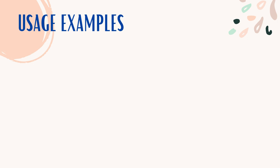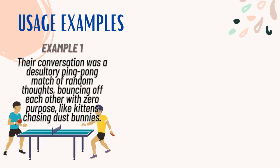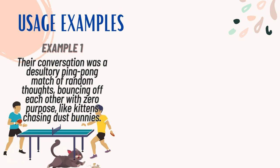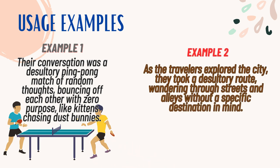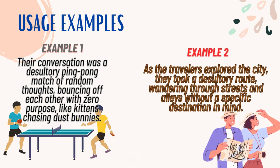Usage examples. Example 1: Their conversation was a desultory ping-pong match of random thoughts, bouncing off each other with zero purpose, like kittens chasing dust bunnies. Example 2: As the travelers explored the city, they took a desultory route, wandering through streets and alleys without a specific destination in mind.